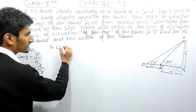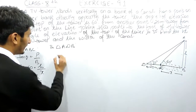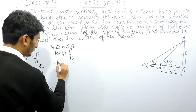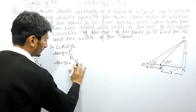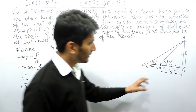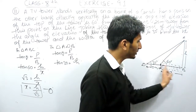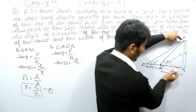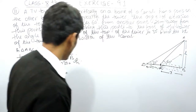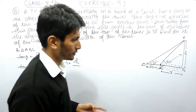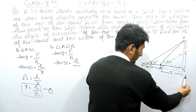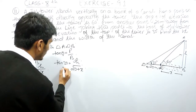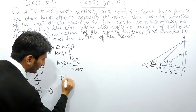In the second triangle ADB, which is the bigger one, tan θ again equals perpendicular upon base. Here θ is 30 degrees. The perpendicular remains h for both triangles since it is the same tower height. However, for this bigger triangle, the base changes to 20 plus x meters — the full horizontal distance from point D to the foot of the tower.